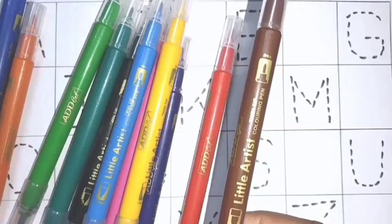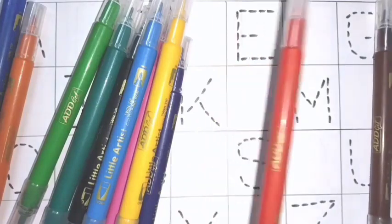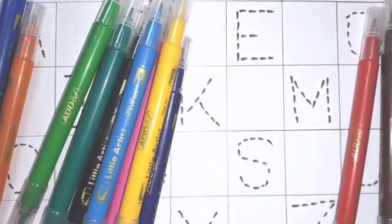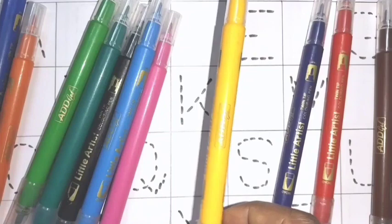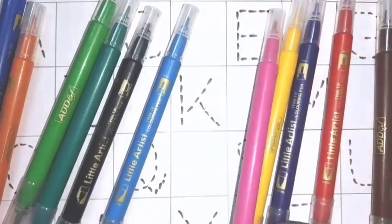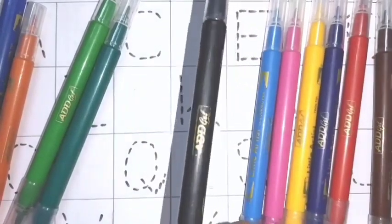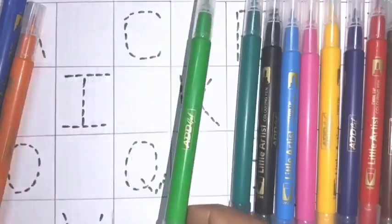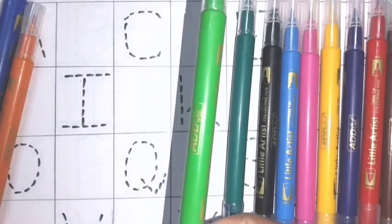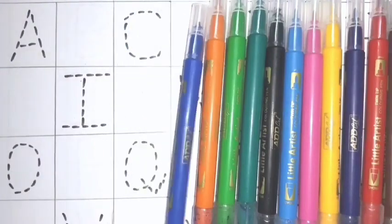Hi friends, welcome to my channel. Mini colors. Brown color, next one is red color, purple color, yellow color, pink color, sky blue color, black color, dark green color, light green color, orange color, and blue color.